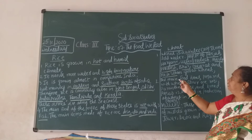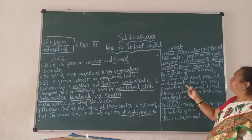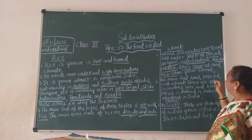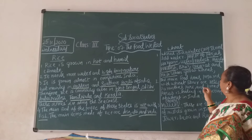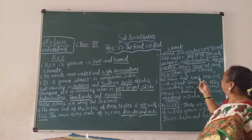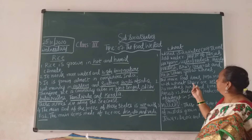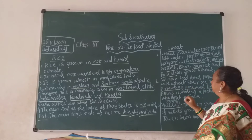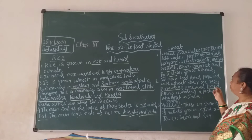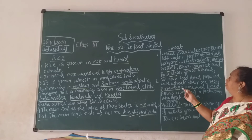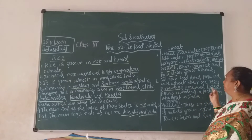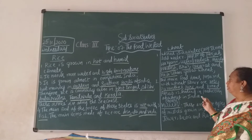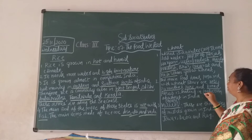The main food items prepared with wheat flour are roti, parotas, curry and bread. Punjab is leading in production of wheat in India.